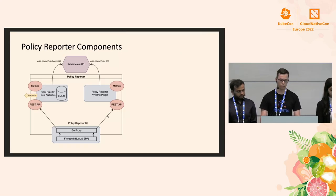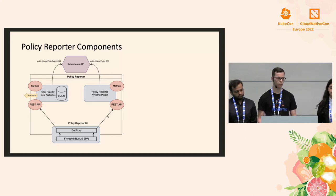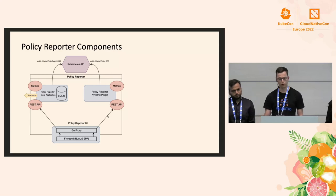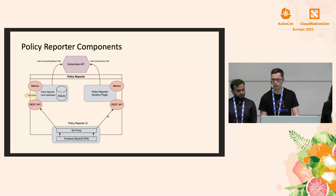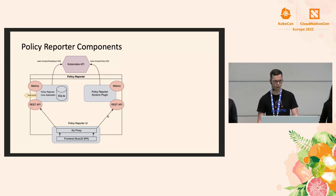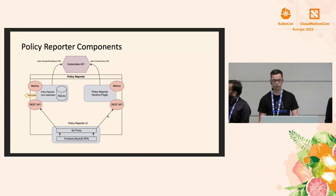To help with these issues, policy reporter provides different features. You can send new violations to different tools — for example, Grafana Loki, Elasticsearch, Slack, Discord, or Microsoft Teams. It has an optional metrics endpoint so you can use existing observability and monitoring tools like Prometheus and Grafana. And it has a standalone dashboard to get a graphical overview of your results with all kinds of filters without the need of additional infrastructure or tooling. Policy reporter consists of three components: the core component responsible for watching over the policy report CRD and converting it into a metrics endpoint and REST API; the Kyverno plugin, which adds additional information about your Kyverno policies; and the policy reporter UI dashboard.